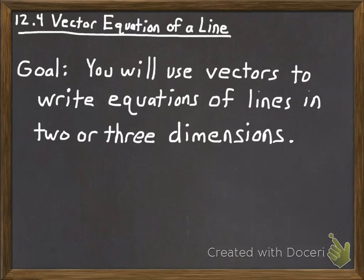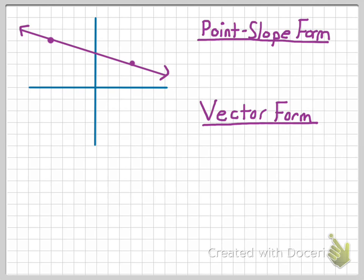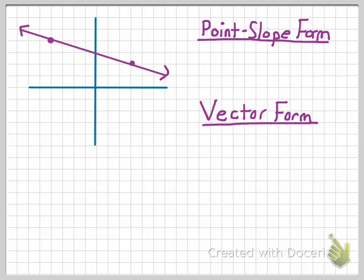The first thing I'd like to do is show you how writing the vector equation of a line is related to what you already know, because it uses similar concepts. I'm going to write an equation for the line you see in this picture in point-slope form — actually a couple of different ways — and then show you how the same concepts go into writing the vector form of that equation.